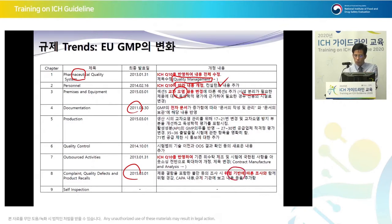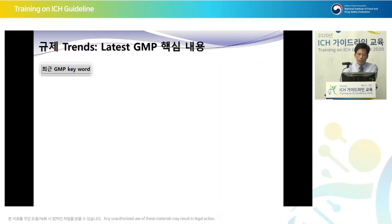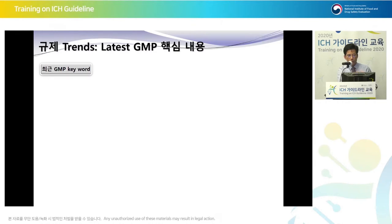For complaints, quality defects, and product recalls, risk-based assessment and investigation were added. So by looking at this table, after the announcement of ICH guidelines, their contents have been aligned as binding requirements in EU-GMP. Based on this interpretation, we can identify about seven to eight keywords from the latest GMP that we have to pay more attention to in our work.